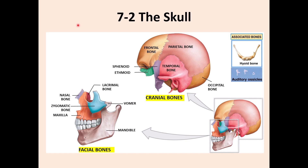Let's start with the skull. The skull is divided into three different parts: one is the facial bone, another is the cranial bone, and the last one is associated bones. Some of the cranial bones or facial bones are single and some are paired, meaning one on each side. I will tell you which ones are paired and which ones are unpaired, meaning just a single one.